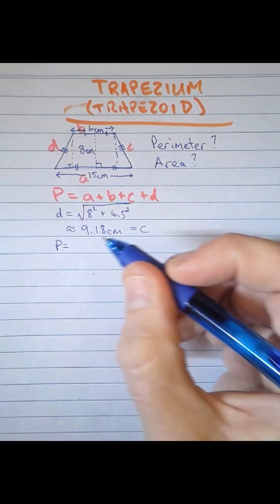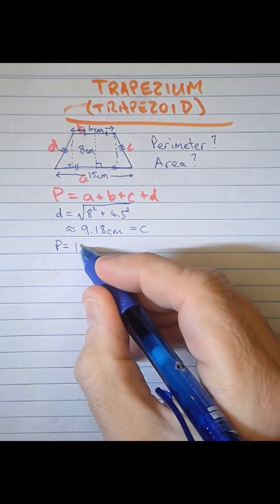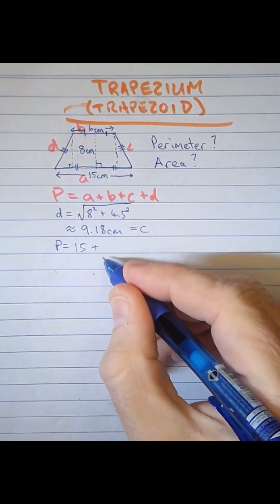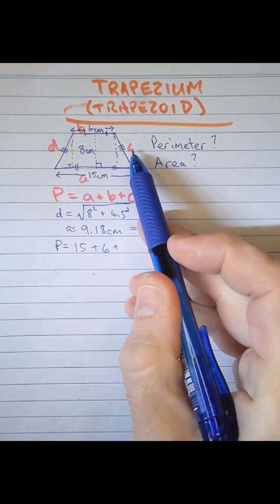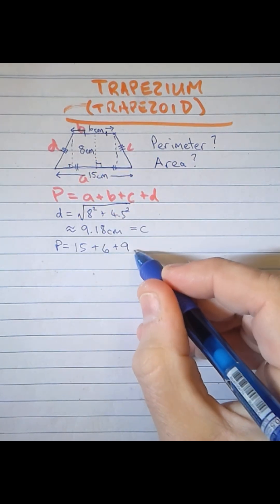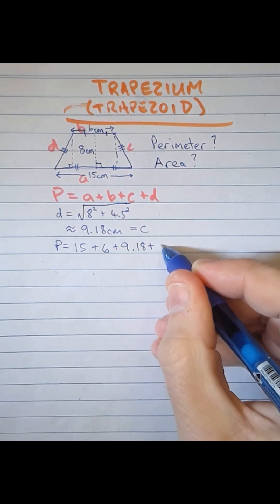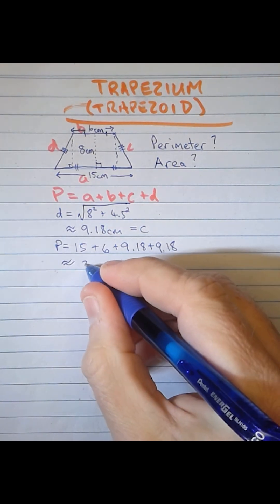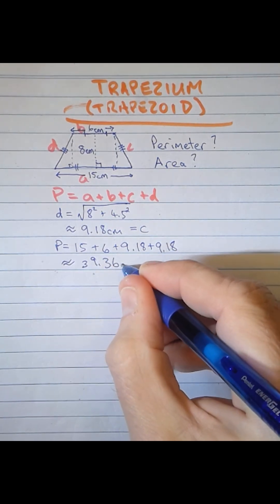Now we can say that the perimeter is equal to A, 15, plus B, 6, plus C and D, which are both 9.18, approximately. So we have a perimeter of approximately 39.36cm.